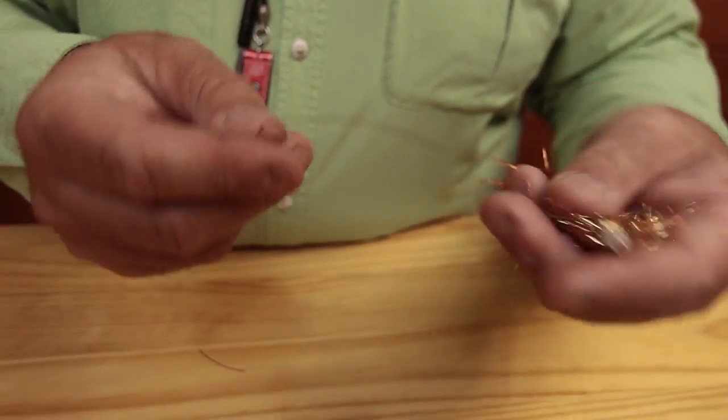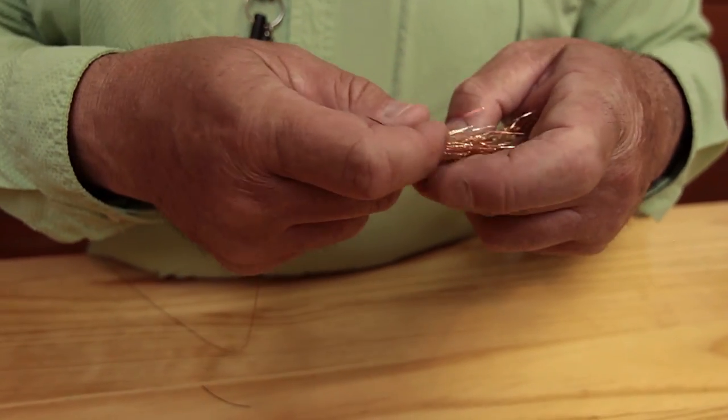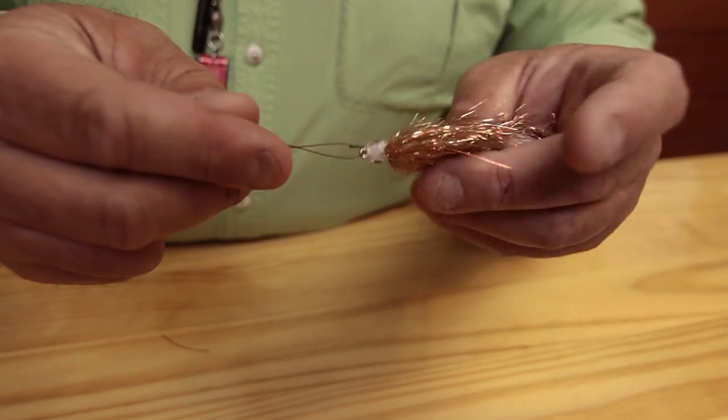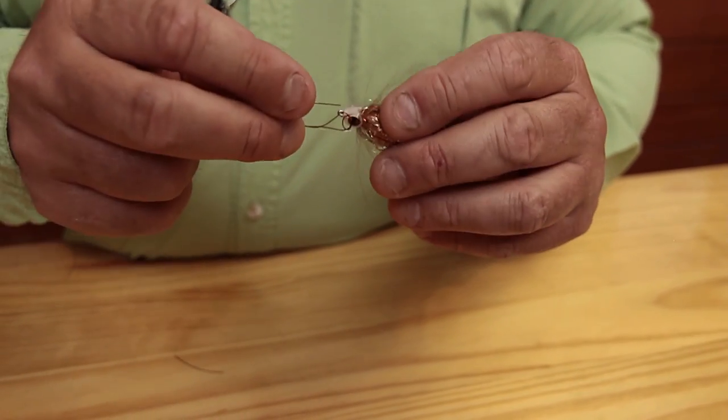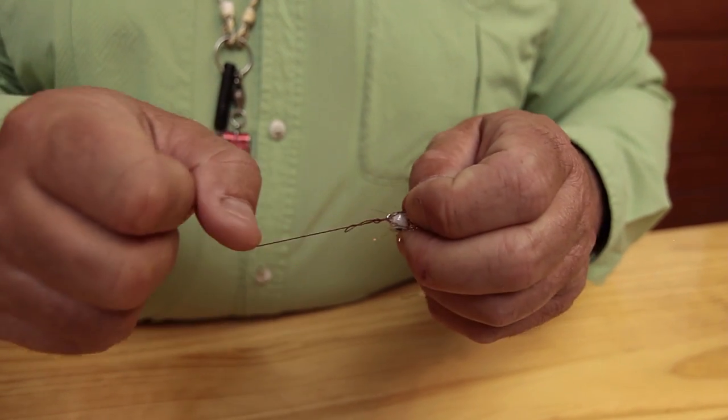As you see, I pick up my fly. Now I pull that knot all the way down to the hook eye. Now I turn my fly two or three times, take the tag, go through the overhand knot, hold the tag and pull tight.